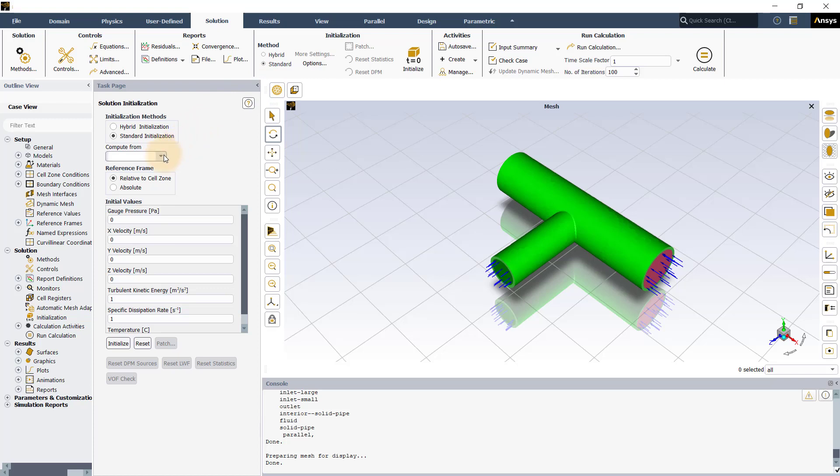In the drop-down menu available, you can choose a surface from which the values for the parameters should be taken from. You can also select all zones to compute average values based on all zones or enter the values manually for each parameter to which you want the flow field to be initialized.